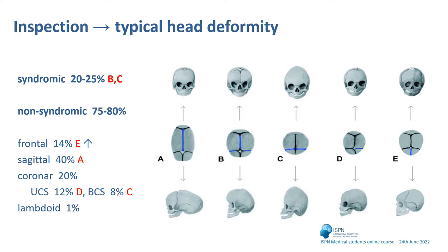Here you can see typical graphs. Graph A shows a sagittal synostosis and the resulting dolichocephalus, which is the most important craniosynostosis and is found in up to 40% of all cases. Here we see a more rare affection of both coronal sutures and the sagittal suture, which leads to a very small head.